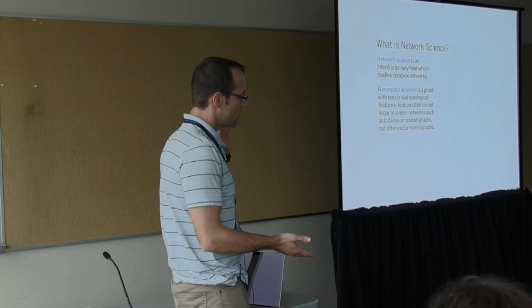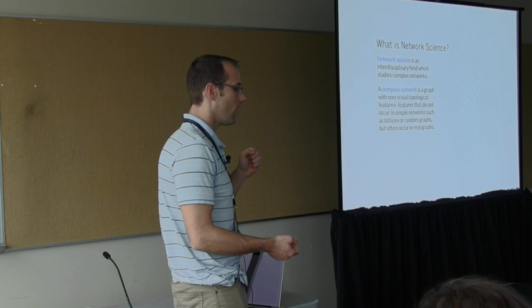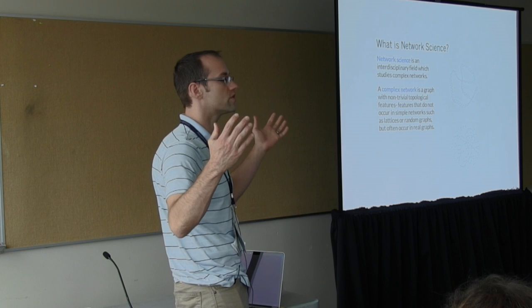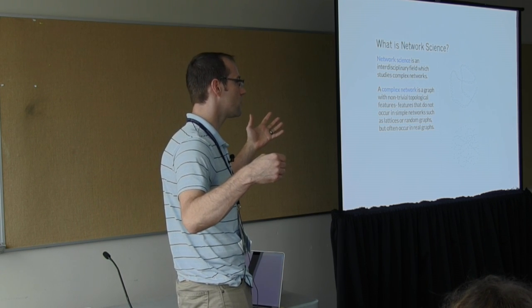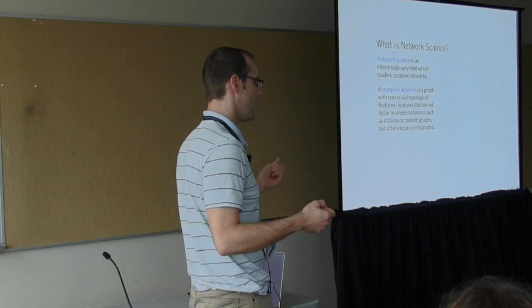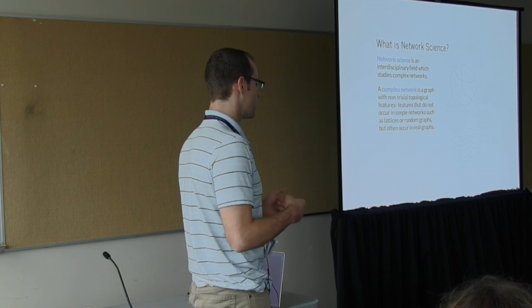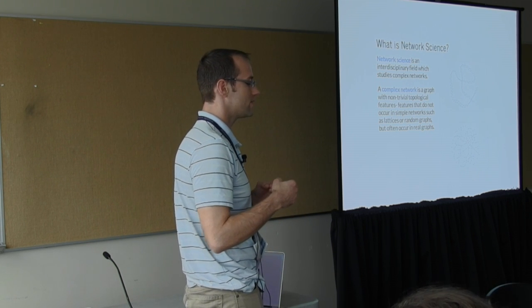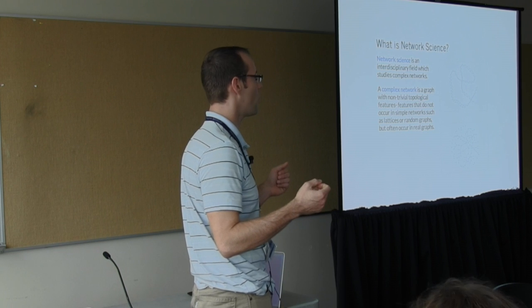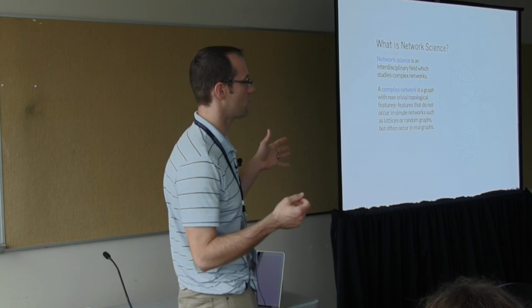Well, complex networks are generally considered those that are between two extremes. One extreme being random networks, where things are just associated by some probability, regardless of locality. I'll try to explain that a little further when we get into random graphs, Erdos-Renyi graphs.